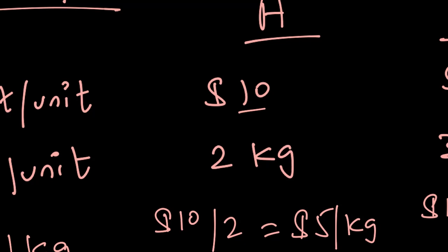Now we should compare product A and B. If you compare this, A will give you five dollars on every kg that it will consume, whereas B will give you four dollars on every kg that it will consume. So now our decision should not be just based on contribution, but upon contribution per kg.